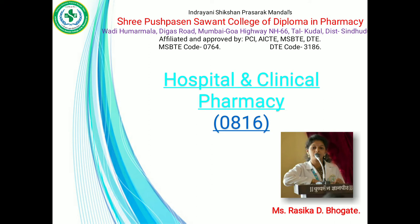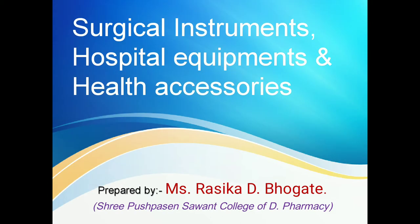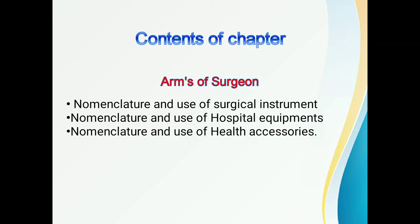Hello students and welcome to the next lecture of Hospital and Clinical Pharmacy. In today's lecture we are going to start our new chapter: Nomenclature and Uses of Surgical Instruments, Hospital Equipment and Health Accessories. All these equipment are together called as Arms of Surgeon. The contents of this chapter include nomenclature and uses of surgical instruments, hospital equipment, and health accessories.